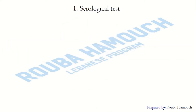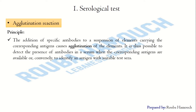Let's start with the first test: the serological test — specifically the agglutination reaction. Its principle: the addition of specific antibodies to a suspension of elements carrying the corresponding antigens causes agglutination of those elements. It is thus possible to detect the presence of antibodies in a serum when we add the corresponding antigens, and also to identify an antigen when we add a ready-made antibody or the suitable test serum.